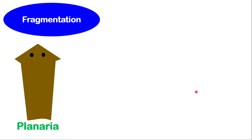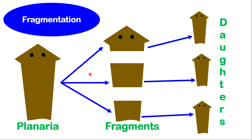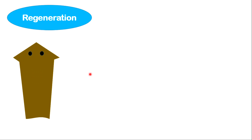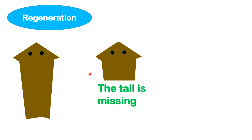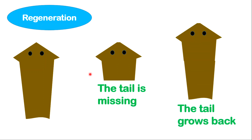Fragmentation is a very cool and interesting type of reproduction. For example, a planaria can be divided into different fragments, and each fragment will develop into a new organism. We also have regeneration, which is kind of similar to fragmentation but there is a difference: in regeneration, if a part of the organism is missing, that organism will be able to regrow that missing portion over a period of time.